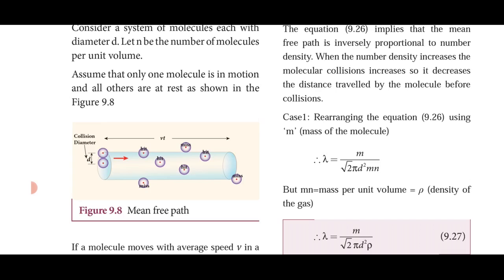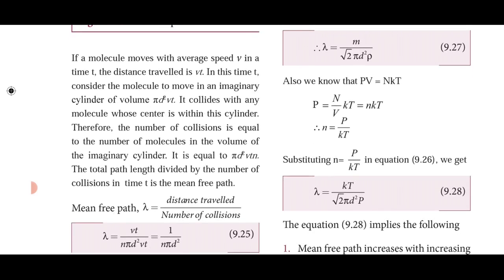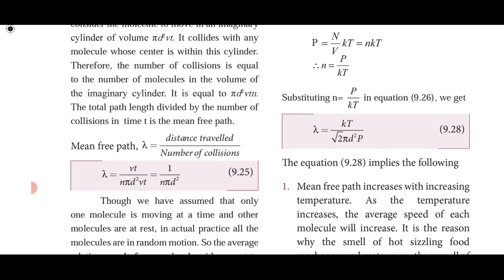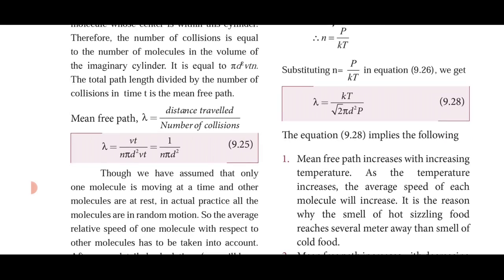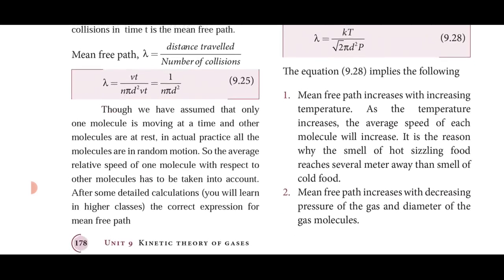If the molecule moves with average speed v, in time t it travels distance vt. It sweeps an imaginary cylinder of volume πd²vt. It collides with any molecule whose center lies within this cylinder. The number of collisions equals the number of molecules in that volume: πd²vtn. The mean free path λ = distance traveled / number of collisions = vt / (nπd²vt) = 1/(nπd²).